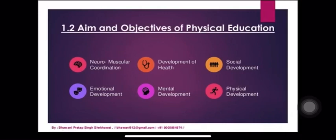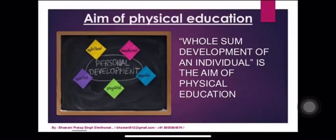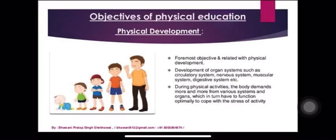Aims and Objectives of Physical Education: These include neuromuscular coordination, development of health, social development, emotional development, mental development, and physical development. The aim of physical education is the wholesome development of an individual. The foremost objective relates to physical development — the development of organ systems such as the circulatory system, nervous system, muscular system, and digestive system. During physical activities, the body demands more from various systems and organs, which in turn must function optimally to cope with the stress of activity.